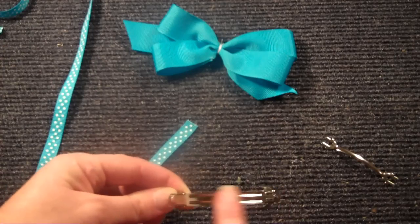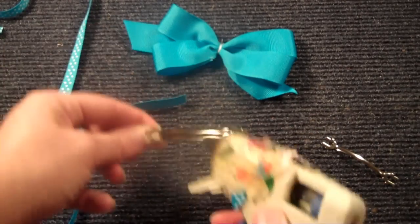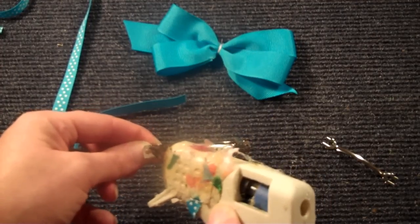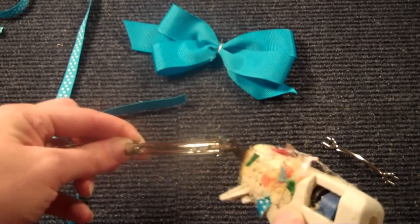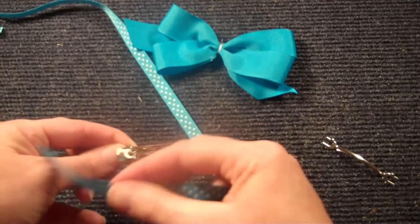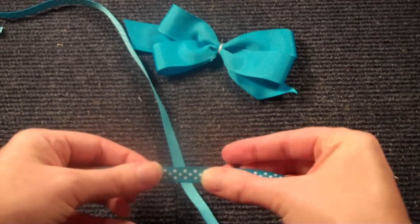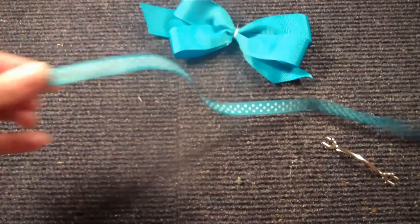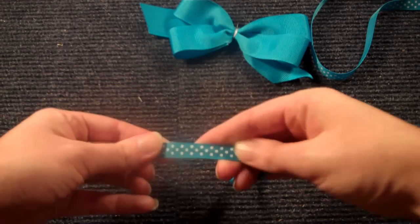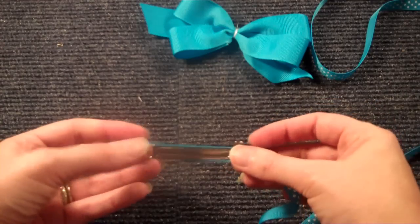Put your glue, just a straight line of glue on your French barrette like so. Then attach your ribbon, and it fits perfectly on the French barrette. Just push down. There it is on the top. Now flip it over.